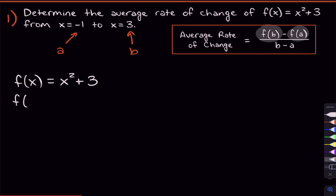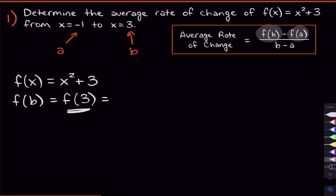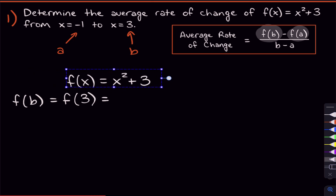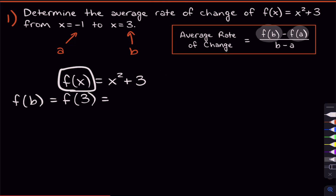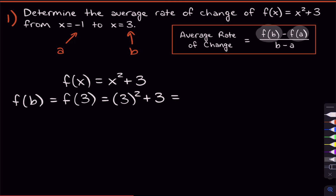To find f(b), I'll find that one first because it's first in the formula. b is three, so f(b) can be rewritten as f(3) — just plug in three for b. The only difference between f(x) and f(3) is that we have a three plugged in for x. So x squared plus three becomes three squared plus three. Three squared is nine, so nine plus three equals 12. And right there, we have f(b).